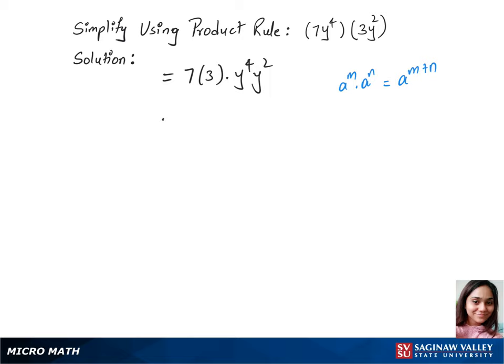This simplifies to 7 times 3 equals 21, and we have the same base y, so we add up the powers: 4 plus 2. This gives us 21y power 6 — that's our answer.